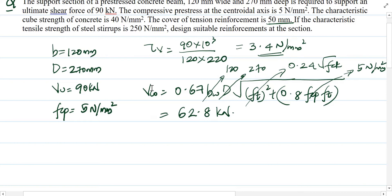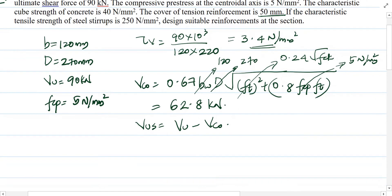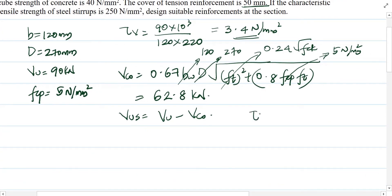Solving, we get Vco = 62.8 kN. This Vco represents the shear taken by your concrete, main reinforcement, and prestressing steel. Now τc = Vco/(bd) = (62.8 × 10³)/(120 × 220) = 2.37 N/mm². This is the shear stress carried by the concrete and tendons.